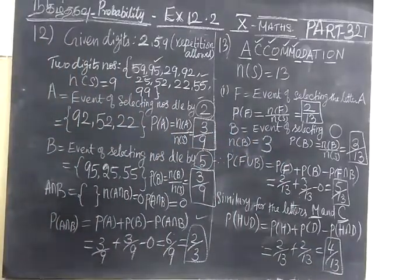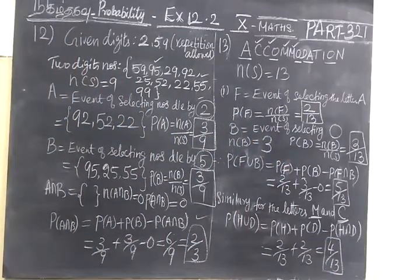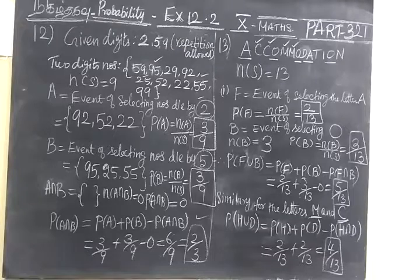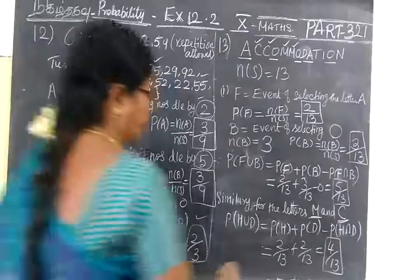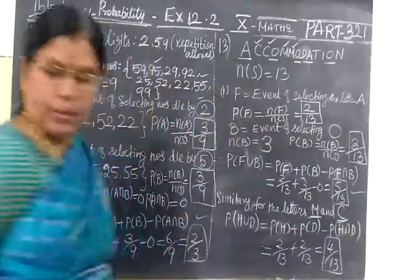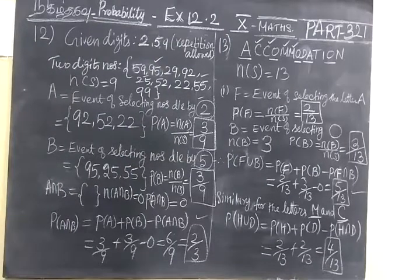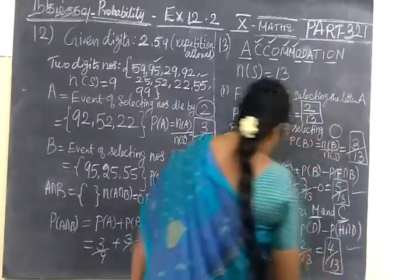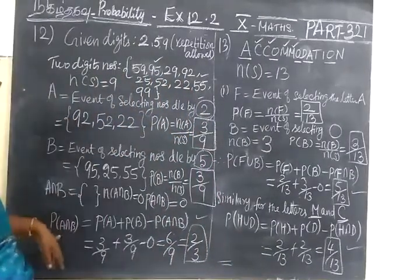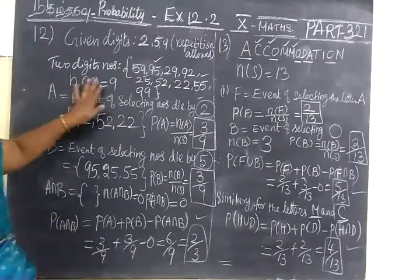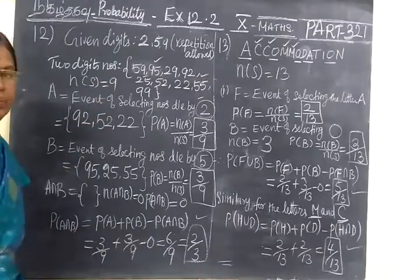Now we check the answer for this. So the answer is 2 plus 3, sorry. Here 3 times it is coming, 5 by 13. So this one is correct. Then the next one 4 by 13. The letters were correct. Only for the time saving I am writing this formula and the event we defined previously. Thank you.